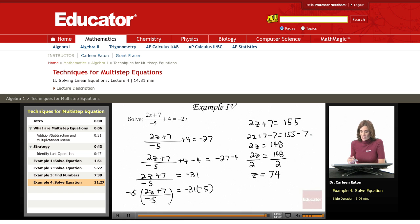I subtracted both sides of the equation by 7. So 2z plus 7 minus 7, subtracting 7 from both sides. And then you're finally down to the last step.